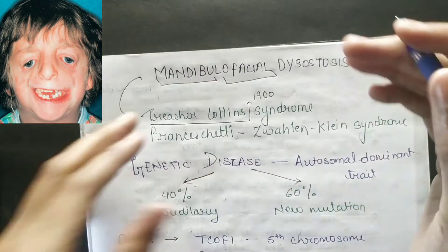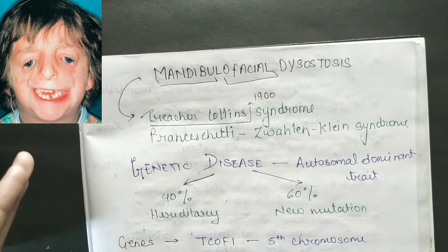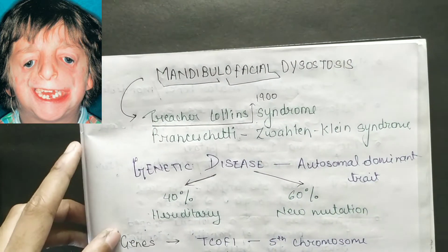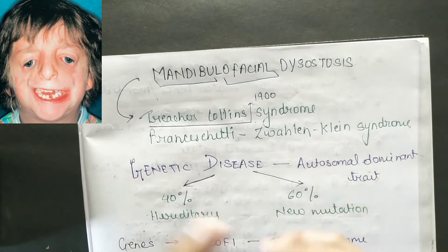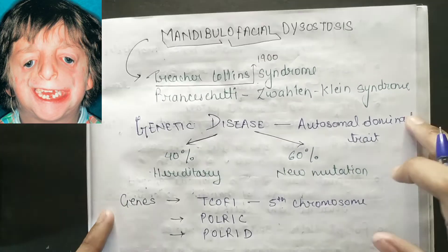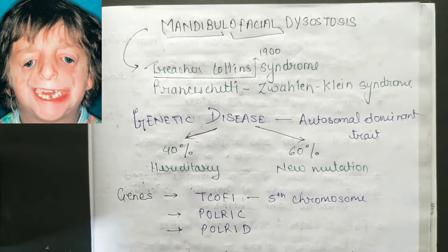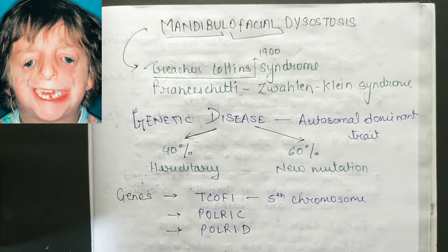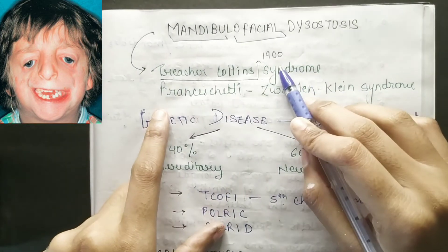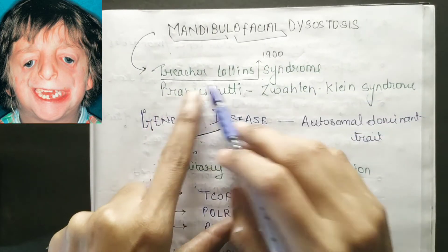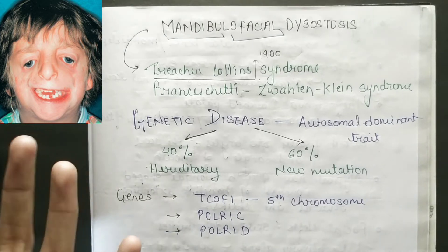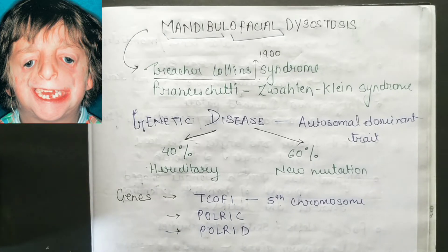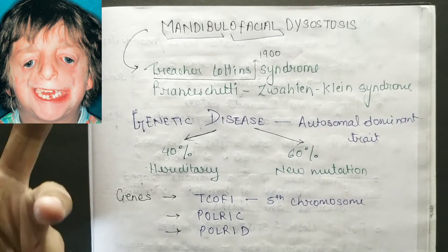Mandibular facial dysostosis is a disturbance in the mandible or face. This is called Treacher Collins syndrome, discovered in 1900. It is also called Franceschetti-Zwahlen-Klein syndrome.